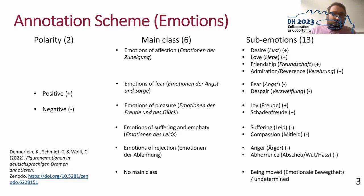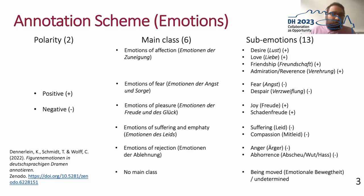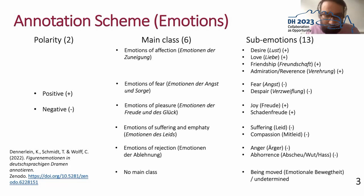As main classes we have the emotions of perfection like love and desire, the emotions of fear, despair, emotions of pleasure like joy and schadenfreude, emotions of suffering, compassion, and the emotions of rejection — anger and abhorrence. We also have the special case of being moved, which is a specific emotion used for emotional movement and more generic emotional affection.